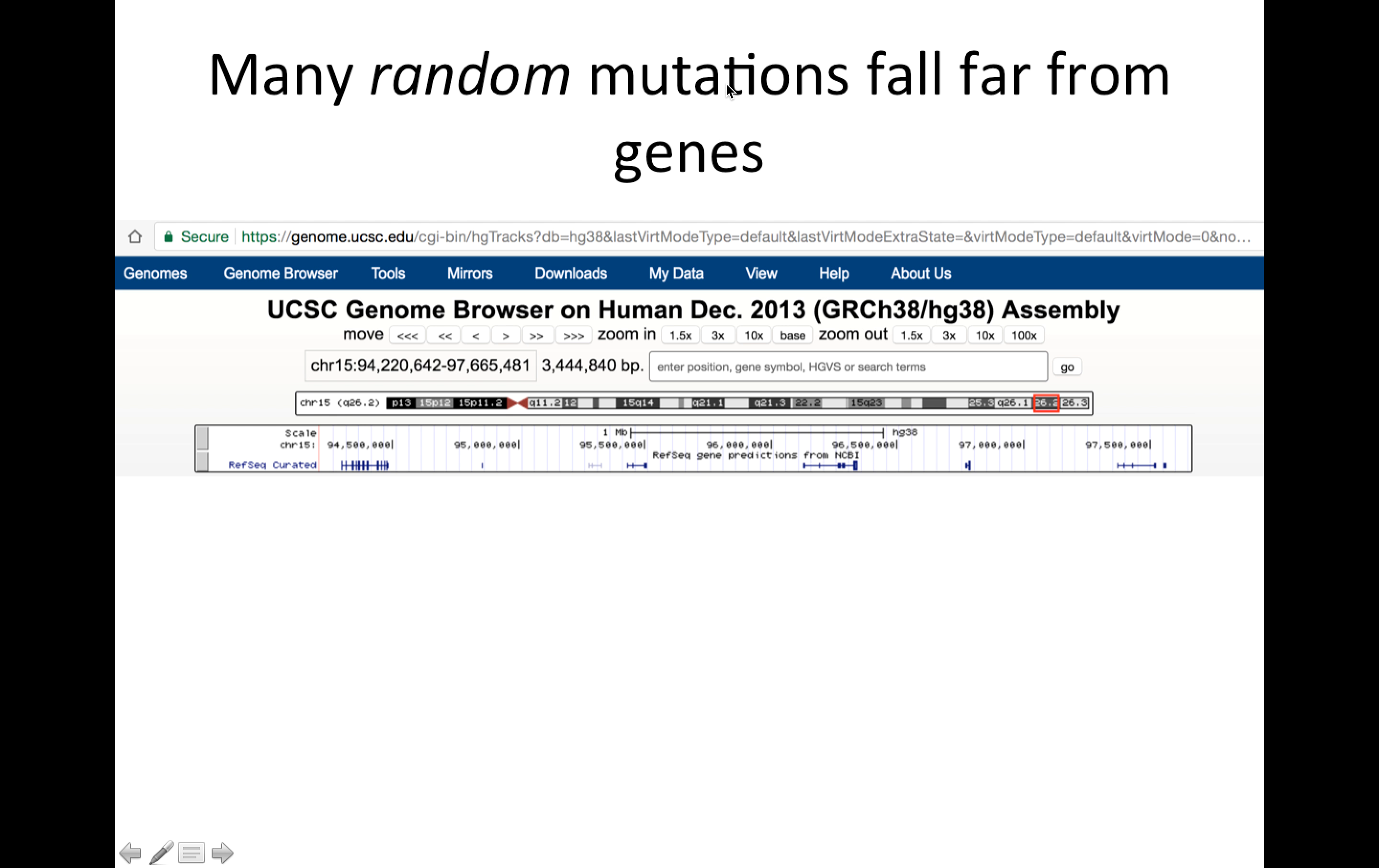And so the point I'd like to make here is that many random mutations, these mutations are happening randomly, and a lot of them fall far from genes. So what we're looking at here is a browser, this is a genome browser, a way to browse, instead of browsing the web with a web browser, we're browsing the genome with a genome browser. And so just because this is interesting, let's go through it a little bit. So we're looking at a chunk of the genome here. And actually, the chunk we're looking at is a chunk of chromosome 15, this is the centromere, and we're looking at a part way down at the end here. So how much of the genome, of the chromosome are we looking at? Well, we are looking at from 94,000 to 97,000, roughly. And actually, here it tells us we're looking at 3.4 million base pairs.